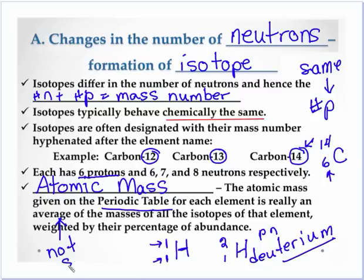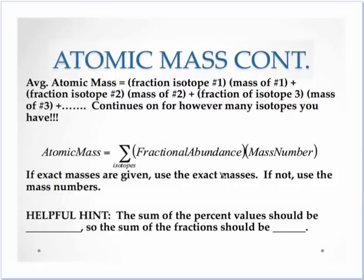When we talk about atomic mass, the one that's given on the periodic table for an element is not a simple average. It is what we call a weighted average.